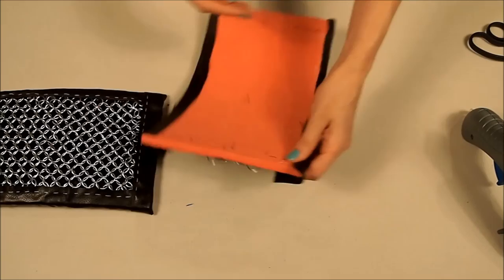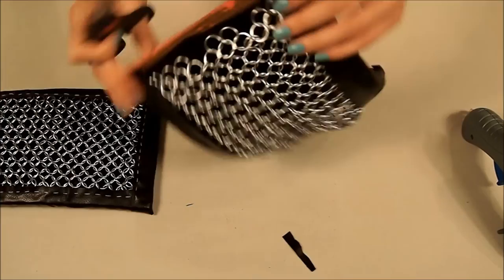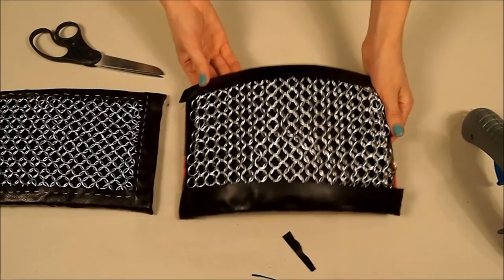Now that everything is glued, now you want to cut this edge. Just make it even and cut the excess off. It doesn't have to be perfect because it's going to be covered anyways. Now we have both sides glued. Now we can start with the two ends.